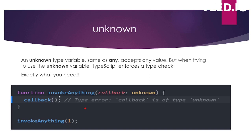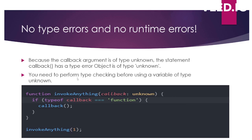unknown is not allowing us to proceed because of the compile-time error — 'callback is of type unknown.' In order to bypass that type error, we have to perform an extra layer of type checking. As you can see in line two, I'm doing: if typeof callback === 'function', then only call the callback. So I have this condition — if callback is of type function, then only treat it as a function. unknown has enforced us to do this type check.